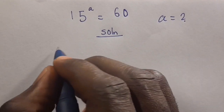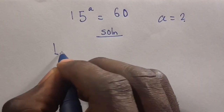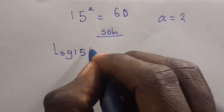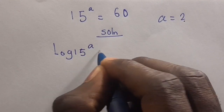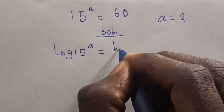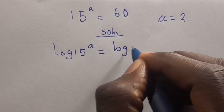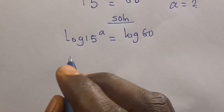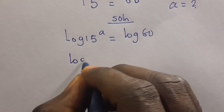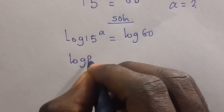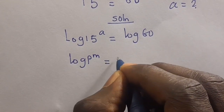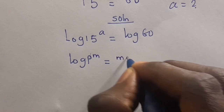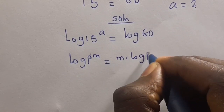From here, let's introduce log. When we have log 15 to the power of A equals log 60. We recall that when we have log P to the power of M, this power will come down to the base as M multiplied by log P.